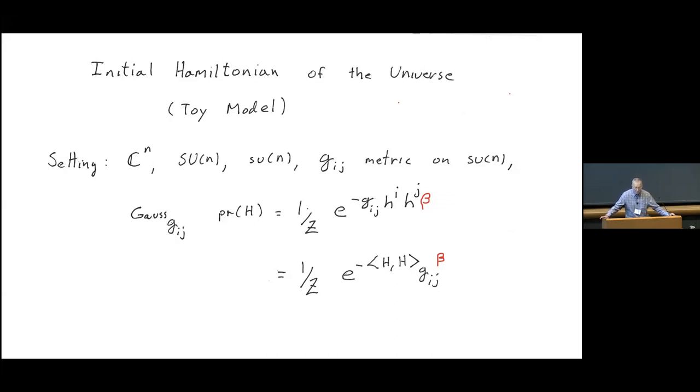And then, getting slightly more interesting, we're going to consider metrics, g_ij, on the Lie algebra. But when we talk about the Lie algebra, I'm going to sneak in a factor of i and write its elements as Hermitian, rather than skew-Hermitian matrices, to match the familiar Hamiltonians that physicists manipulate.